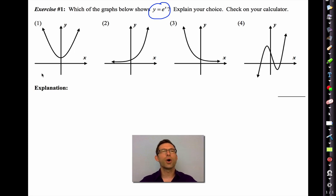Well, I certainly hope that you didn't pick one, which is a parabola, or four, which is more of a complicated polynomial graph. It has to be two or three. So, the question is, is y equals e to the x an increasing exponential, or is it a decreasing exponential?